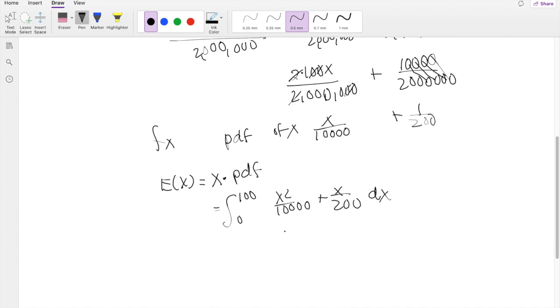All right, so this is equal to, we're taking the anti-derivative, so we add 1 and we divide, plus x squared over 400, integrating from 0 to 100. This is equal to 58 and 1 third.